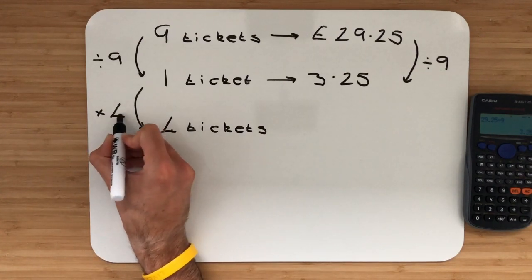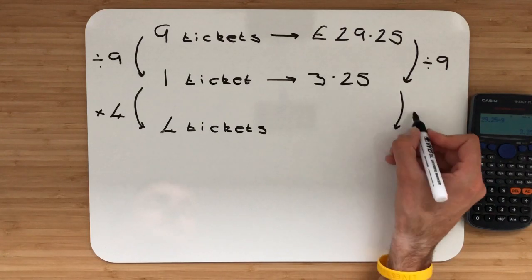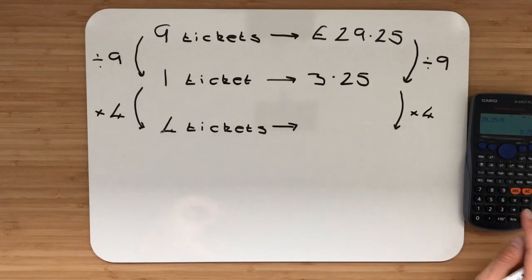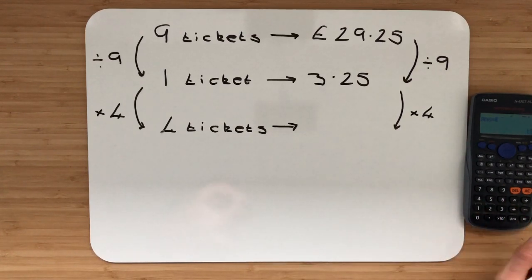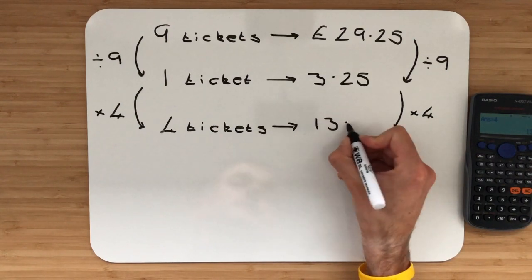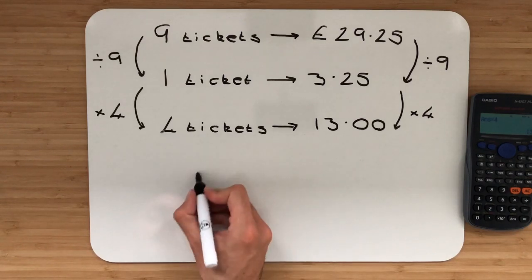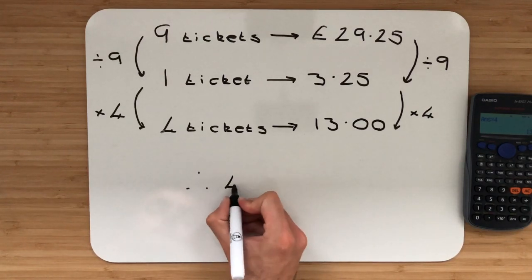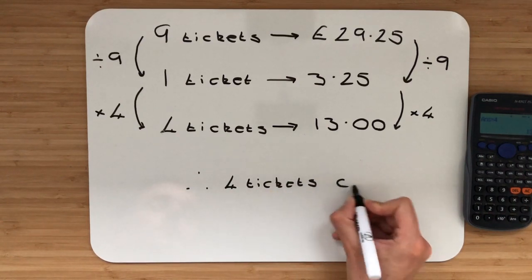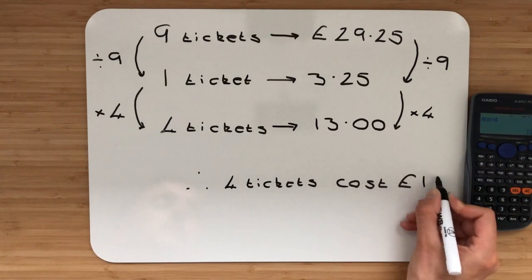So to do that we multiply by four. Whatever we do to the left I'm going to do the exact same thing to the right I'm going to multiply that by four. Take your calculator multiply by four. So the final answer is thirteen. Let's put in our decimals. So therefore four tickets cost £13.